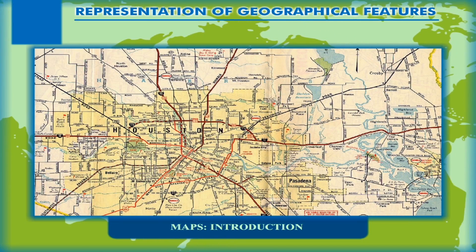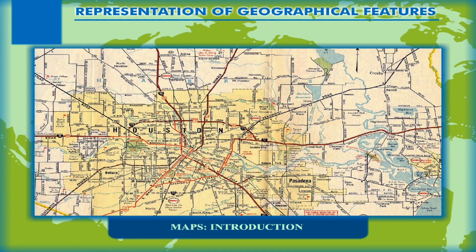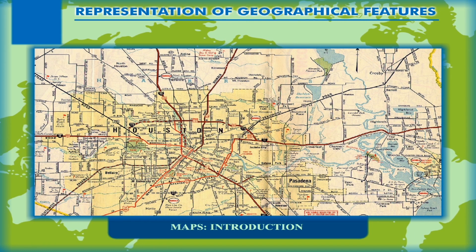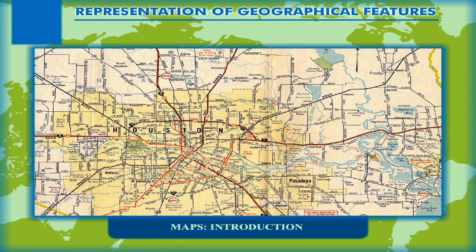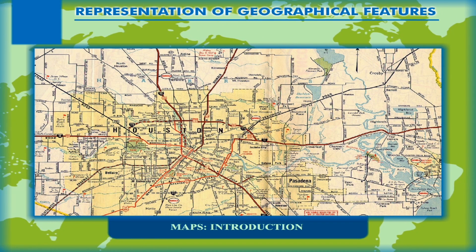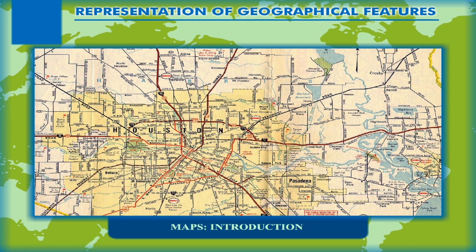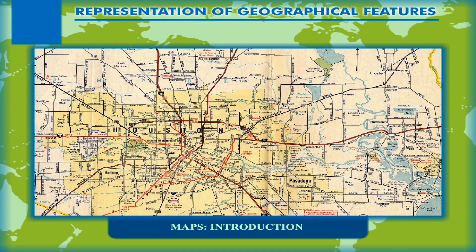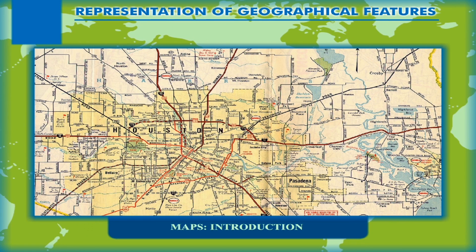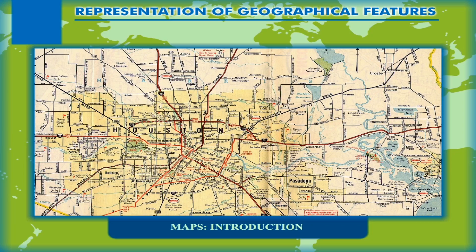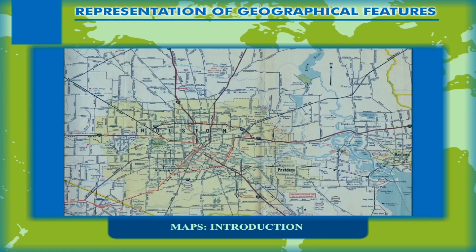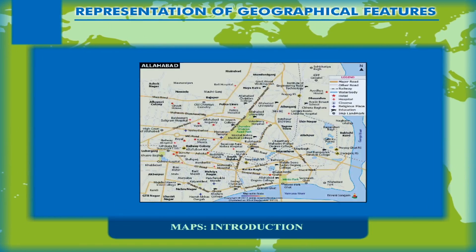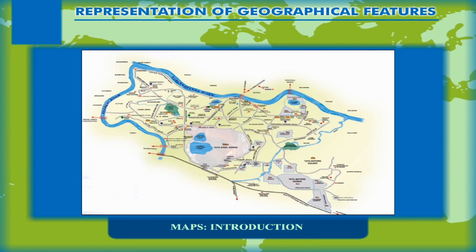Maps become useful for this purpose. They can show the entire Earth or any part of it. Unlike globes, they can show small areas with detailed information about them — for example, a city map or a locality map.